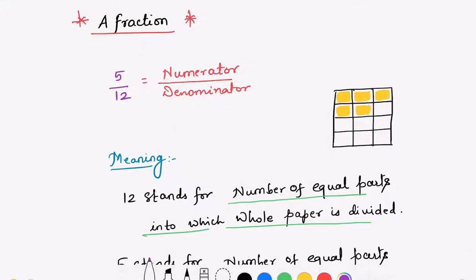A fraction consists of two parts. Considering the example 5 by 12, this is a fraction because it is also a number. The fraction consists of two parts: first is the denominator, which is below the line, and the other is the numerator, which is above the line.